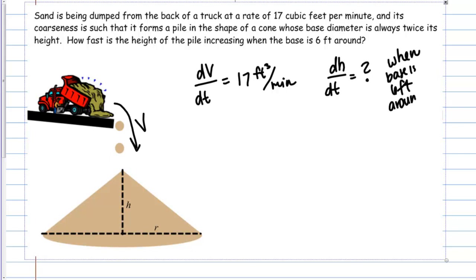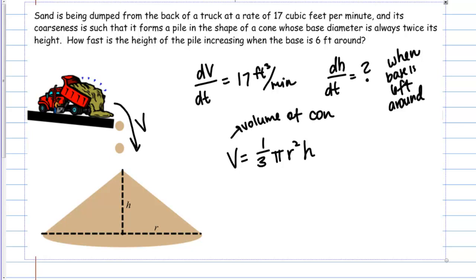After establishing our rates, we want to find a relationship between our variables — specifically one that includes volume and height. Very often this is a common geometry formula. Since our sand pile is a cone, we'll use the volume of a cone formula: V = (1/3)πr²h. This formula relates the volume of the pile to its height, so we've found a relationship between the variables.